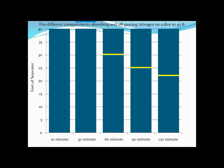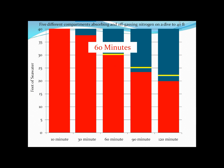Let's look at the 40-foot chart again, putting in the M values. You'll remember that the M values are off the scale for the 10 and 30-minute compartments — they fill very quickly. The 60-minute compartment hit its M value after 60 minutes. I'm now going to add in some markers to remind us where the nitrogen loadings were at the time we decided to end the dive and surface.